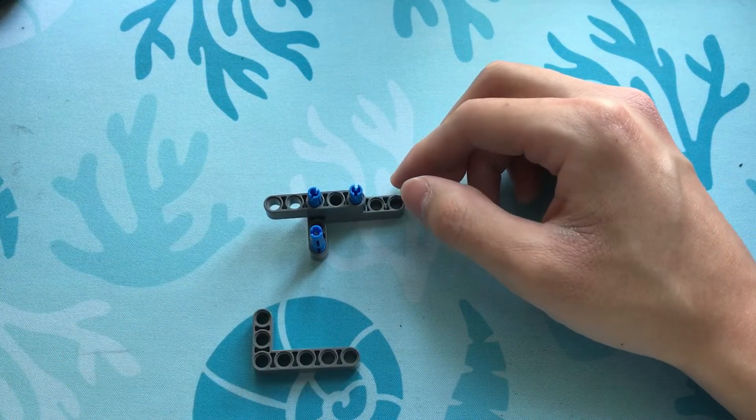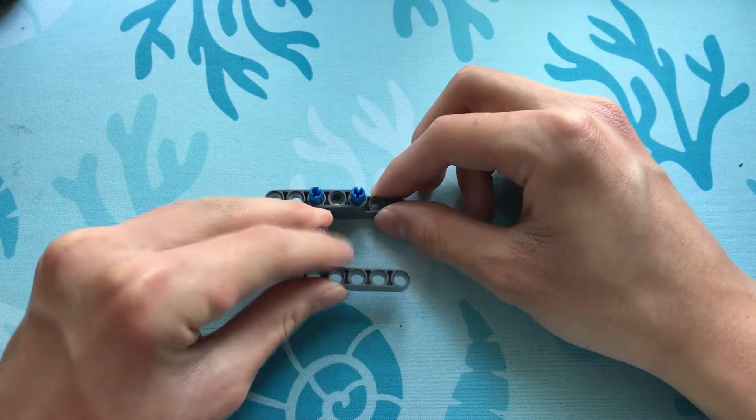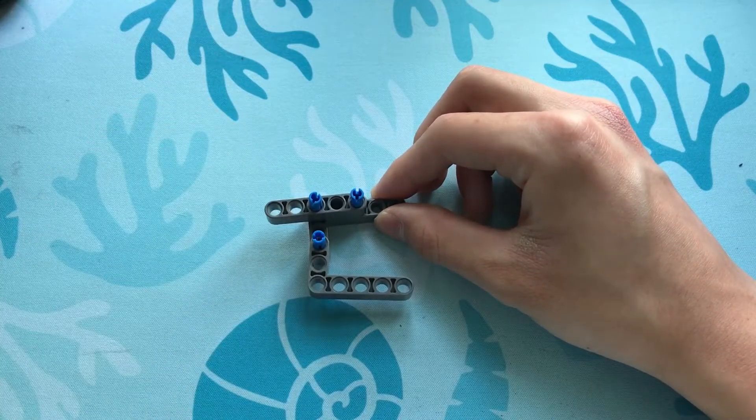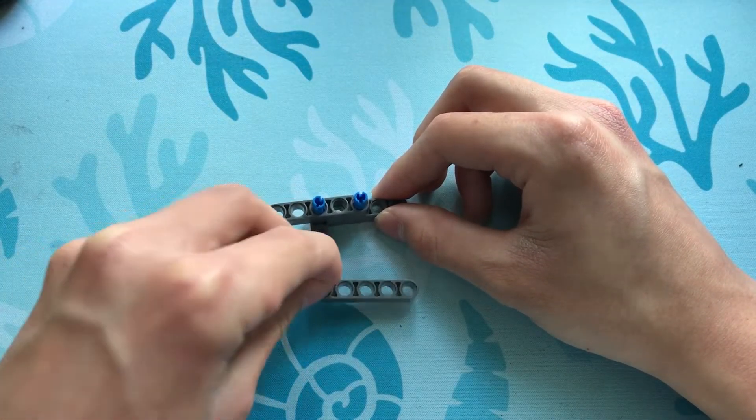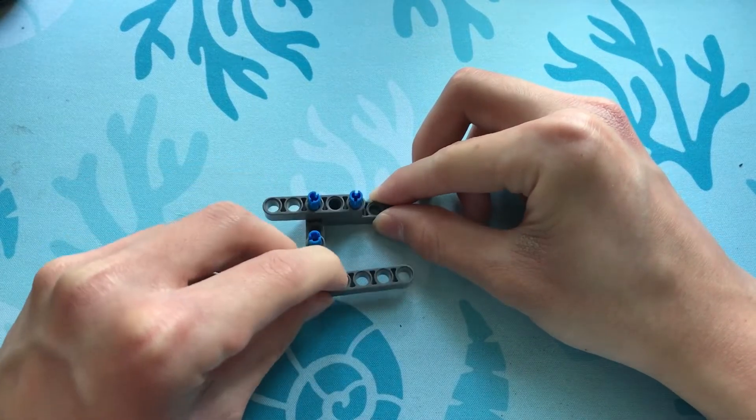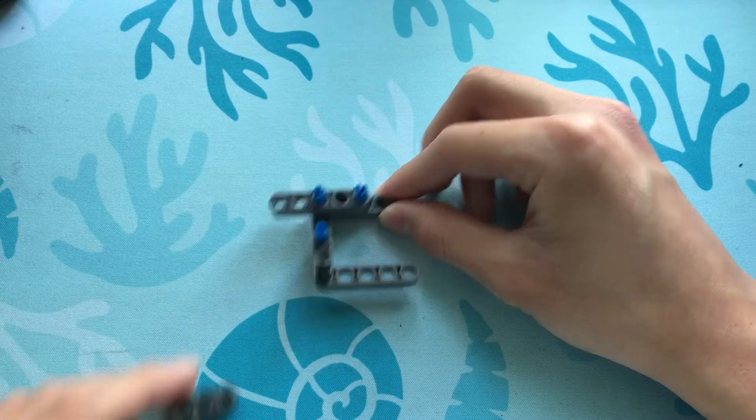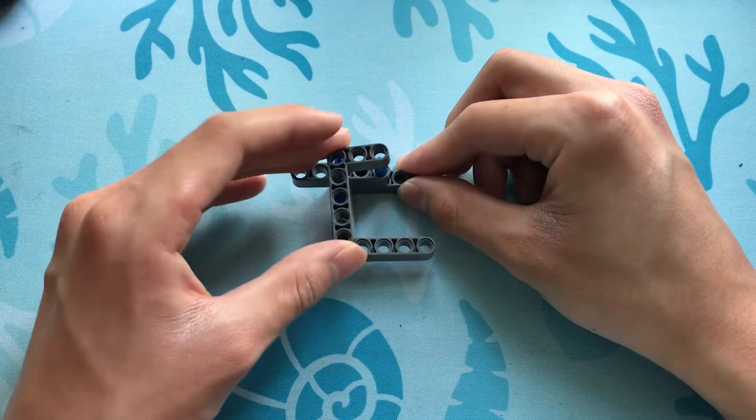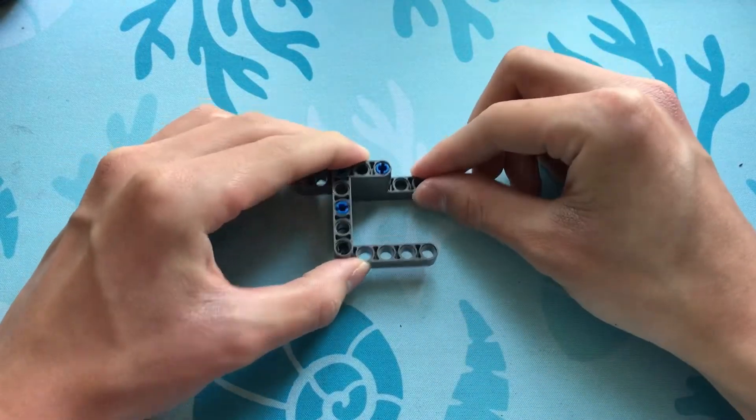We'll connect another 3x5 L beam onto this blue pin like this, and we'll insert a black pin here. Let's take a 3x5 L beam and connect it onto all of these pins like that.